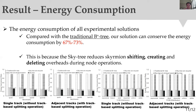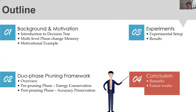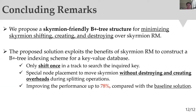This is because the SkyTree indexing scheme reduces skyrmion shifting, creating, and deleting overheads during node operations. In summary, we propose a skyrmion-friendly B+tree structure to minimize skyrmion shifting, creating, and destroying overheads over skyrmion racetrack memory. The proposed solution takes the benefit of skyrmion racetrack memory to construct a B+tree indexing scheme for key-value database systems, improving performance up to 78% compared with the baseline.